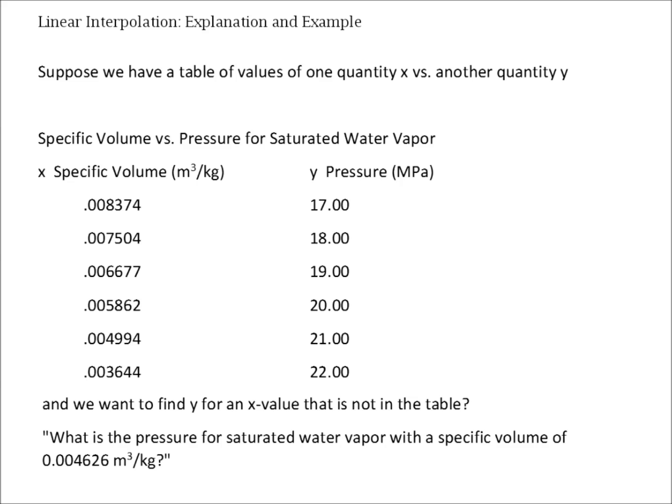But what if we wanted to find the pressure for a specific volume that was not listed on the table? For example, what if we wanted to know the pressure for saturated water vapor that has a specific volume of .004626 cubic meters per kilogram? We see that none of the values in the table tell us what the pressure is at that particular specific volume.